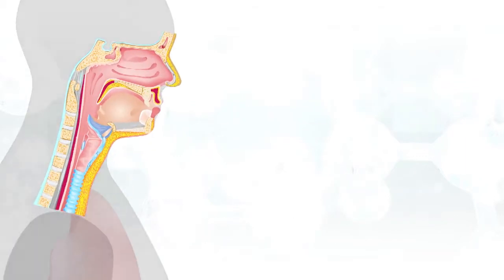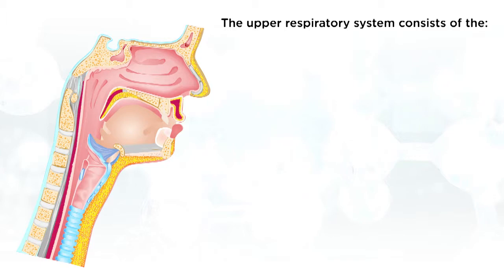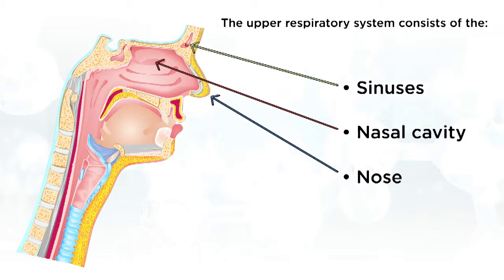Let's dive into the upper respiratory system. The upper respiratory system consists of the nose, nasal cavity, sinuses, and the pharynx.